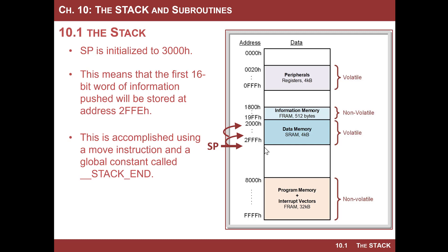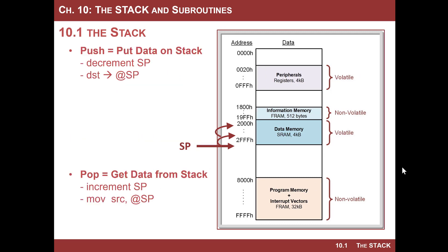When you do your first insertion of information on the stack, the stack pointer is decremented up and you move to that location. When you want to get information, it'll be incremented back. Notice that we're talking about how important it is to initialize the stack pointer, but we don't do it ourselves — it's been done for us when we create a new CCS project. There is a global constant called __stack_end, and that's what takes care of initializing the stack based on where data memory is. When we create a new CCS project and get that main.asm, you'll see this is taken care of for us.